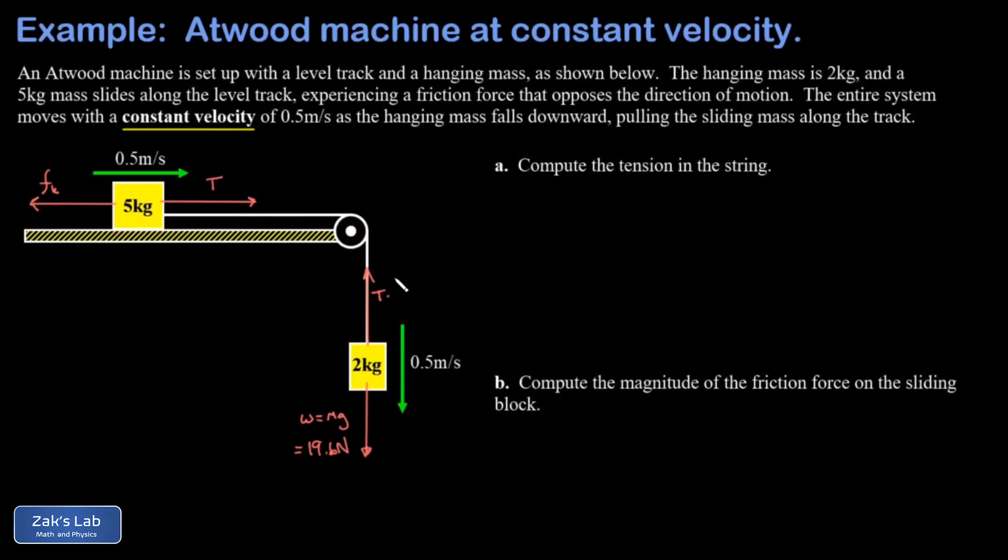In part A, we're asked for the tension in the string. We know that two kilogram block is moving at constant velocity, and constant velocity means the net force must be zero. Otherwise there would be some acceleration. For the net force to be zero on this two kilogram block, my forces must balance and my tension must be equal to 19.6 newtons.